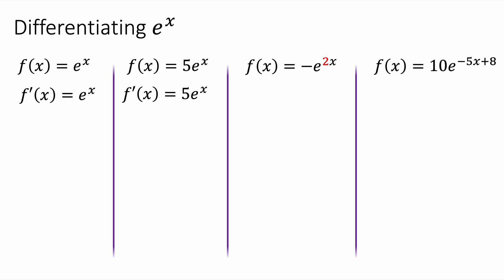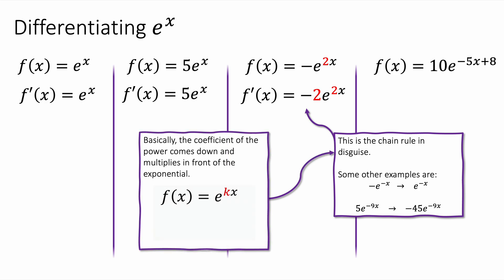Next one: minus e to the power 2x. Well here the power is going to come down. It's going to be minus 2 e to the power 2x. And this is just because of the chain rule. That's the chain rule in disguise.